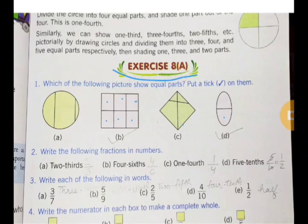Then write the following fractions in numbers. Two-thirds we write 2 by 3. Four-sixths, 4 by 6. One-fourth. And five-tenths, 5 by 10.